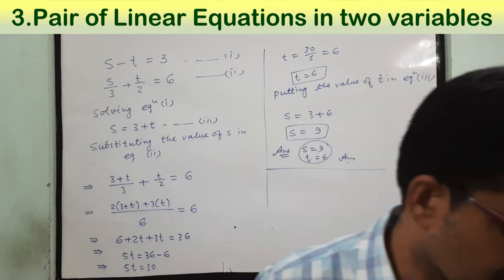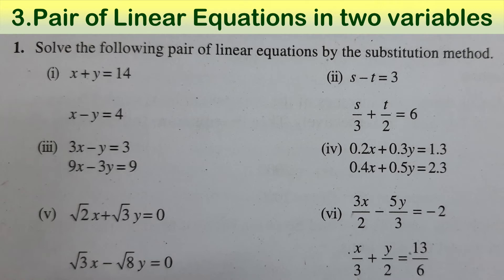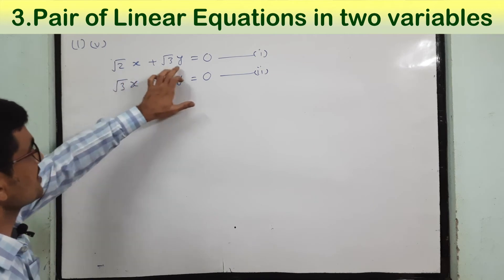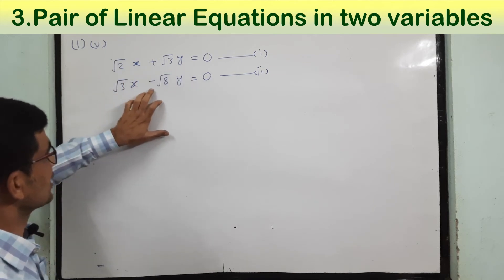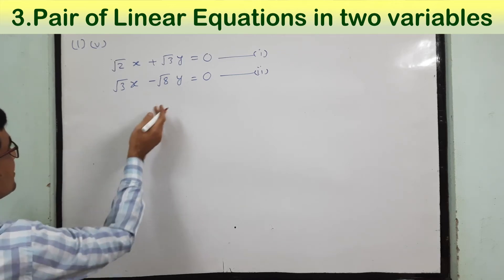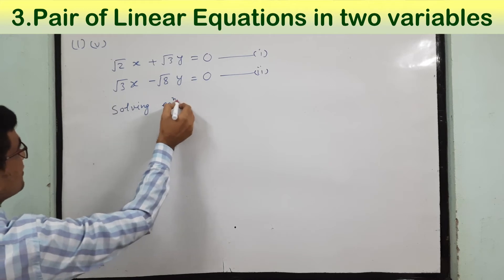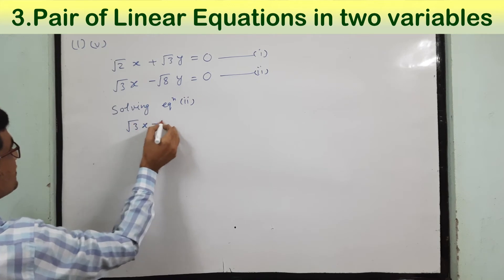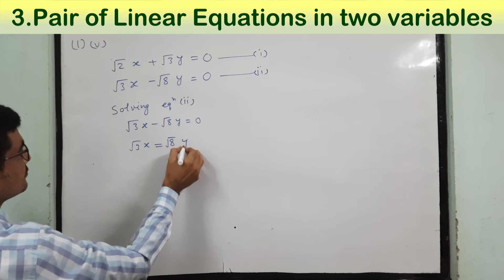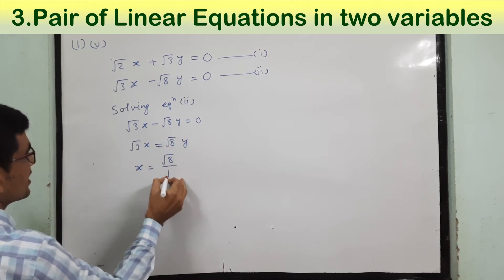Now let us look at question number 5. Here, root 2 times x plus root 3 times y is equal to 0, and root 3 times x minus root 8 times y equals 0. Solving equation 2 — since the minus sign is there — from root 3 x minus root 8 y equals 0, we get x equal to root 8 by root 3 times y.